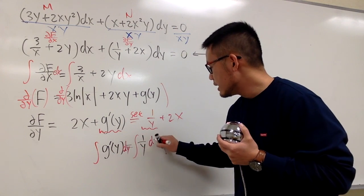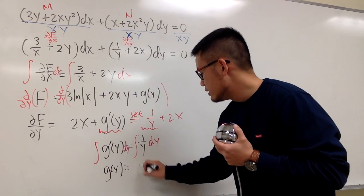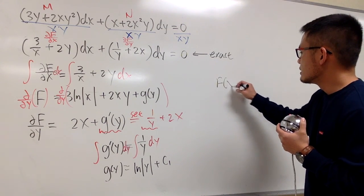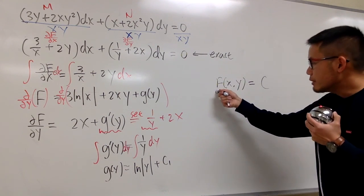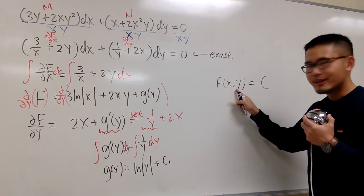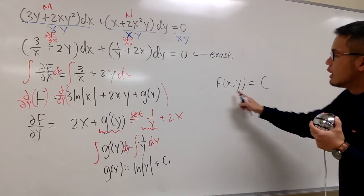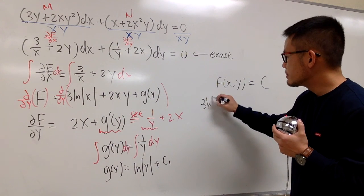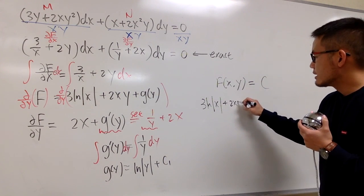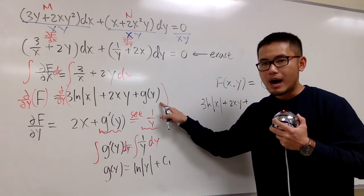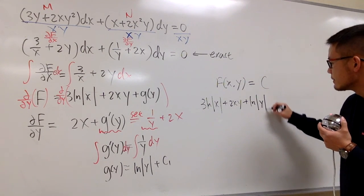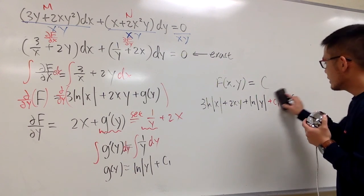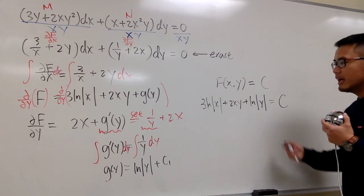Integrate both sides with respect to y: g(y) = ln|y|, plus a constant. So this is our F. At the end, the answer is F(x, y) = constant: 3 ln|x| + 2xy + ln|y| = C. You can bring constants to the right-hand side, so all constants on the right.